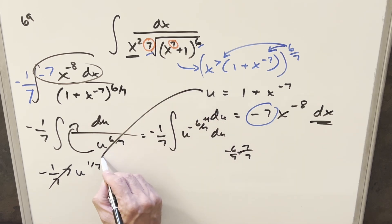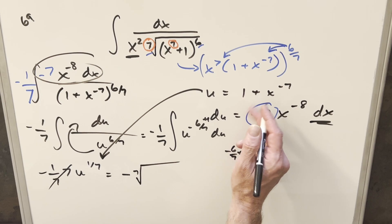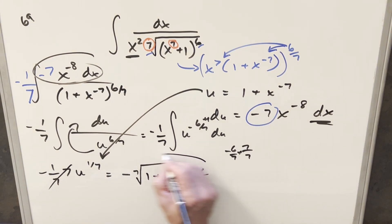Now let's just back substitute in order to finish it off. So let's change the format here. So we have this minus out front. Let's write this thing as the 7th root. And then for this, we have 1 plus x to the minus 7, add a plus C, and that's it.